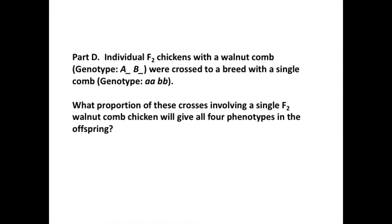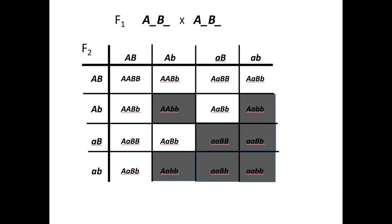But these F2 walnut comb chickens will have different genotypes, as shown here. To have a walnut shaped comb, they need to have a dominant allele for each gene, but they could be homozygous or heterozygous. The offspring that do not have dominant alleles are then grayed out.